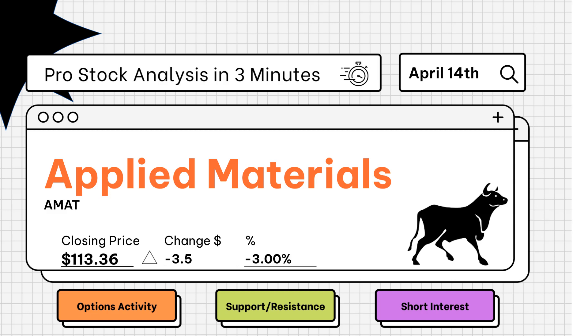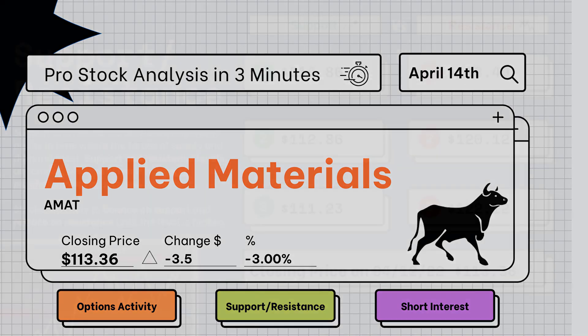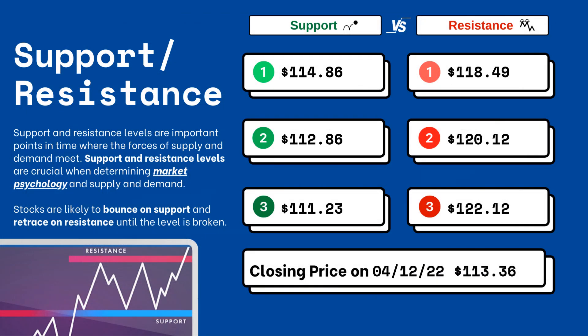Pro stock analysis under three minutes — we're going to be covering support and resistance levels, options activity, and short interest on your favorite stocks. Let's get right to it. Support and resistance levels are very important because they let you know where supply and demand are meeting. On the right side you'll see three support levels and also three resistance levels.